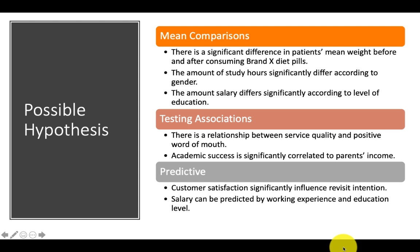Let's take a look at examples of possible hypotheses according to research objective. For mean comparison: there's a significant difference in patient's mean weight before and after consuming brand X diet pills; study hours differ significantly by gender; salary differs significantly by education level. For associations: there is a relationship between service quality and positive word of mouth; academic success is significantly correlated to parents' income. For predictive nature: customer satisfaction significantly influences revisit intention; salary can be predicted by working experience and education level.